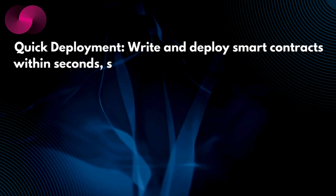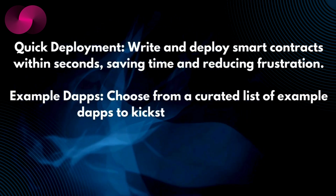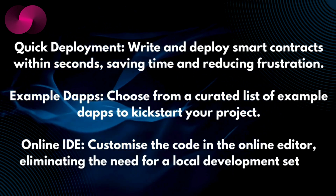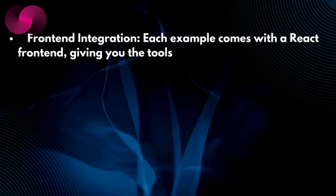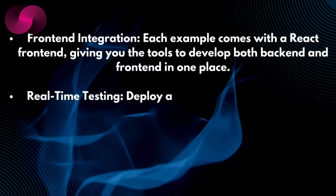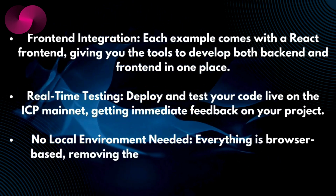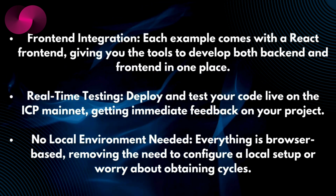ICP Ninja positions itself as the go-to platform for developing and deploying smart contracts on ICP, offering a variety of benefits: quick deployment — write and deploy smart contracts within seconds; example dApps — choose from a curated list to kick-start your project; online IDE — customize code in the online editor, eliminating the need for a local development setup; front-end integration — each example comes with a React front-end; real-time testing — deploy and test live on the ICP mainnet; and no local environment needed, as everything is browser-based.